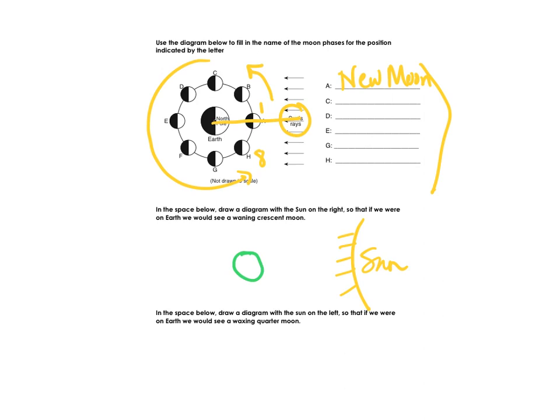In the space provided below here, we're going to now put the sun on the left-hand side. We're going to have our Earth. And now we're going to put the moon in the position that we would see a waxing quarter moon. Waxing quarter moon, then, is going to be our first quarter. So in this one, we're going to be looking for a first quarter, which is called our waxing quarter moon. That's our half moon.